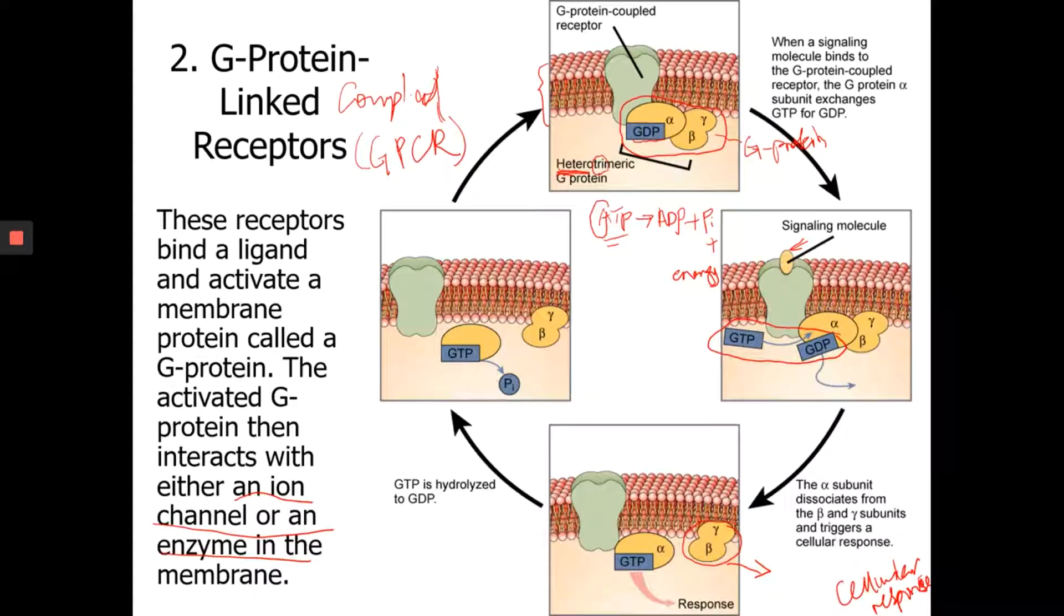So it's going to disassociate, so you have GDP and a phosphate group. So this is going to make the G protein go back to the inactive form.